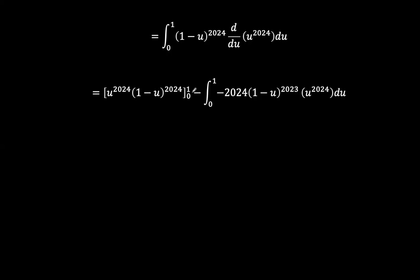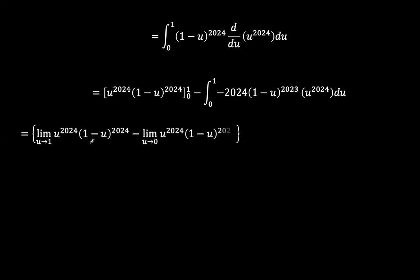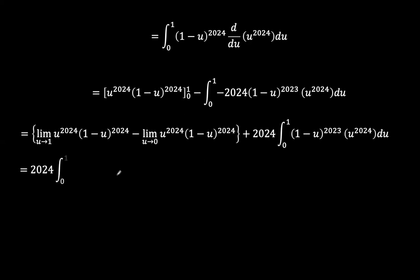Since we know our u and dv, the product uv is u to the power of 2024 times 1 minus u to the power of 2024, evaluated with the given limits. Minus: our du is the derivative of 1 minus u to the power of 2024, which is minus 2024 times 1 minus u to the power of 2023, times v, which is u to the power of 2024. At the upper limit u equals 1, 1 minus 1 is 0, giving 0. At the lower limit u equals 0, u to the power of 2024 tends to 0. So we are left with the integral of 2024 times the integral from u equals 0 to 1 of 1 minus u to the power of 2023, times u to the power of 2024.